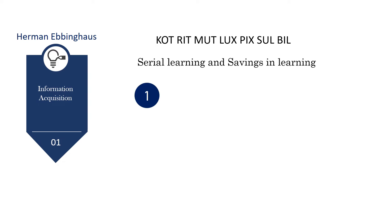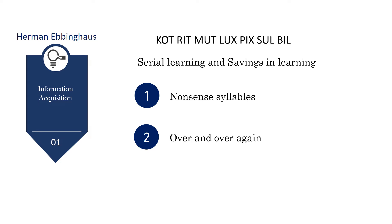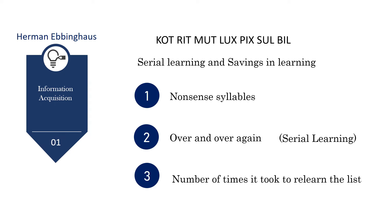First, he made a list of nonsense syllables consisting of three letters with a vowel in between. Second, he read the words over and over again until he memorized everything in order — doing so is what we refer to as serial learning. And third, he tried to determine the number of times it took for him to relearn the list, which is referred to as savings in relearning.